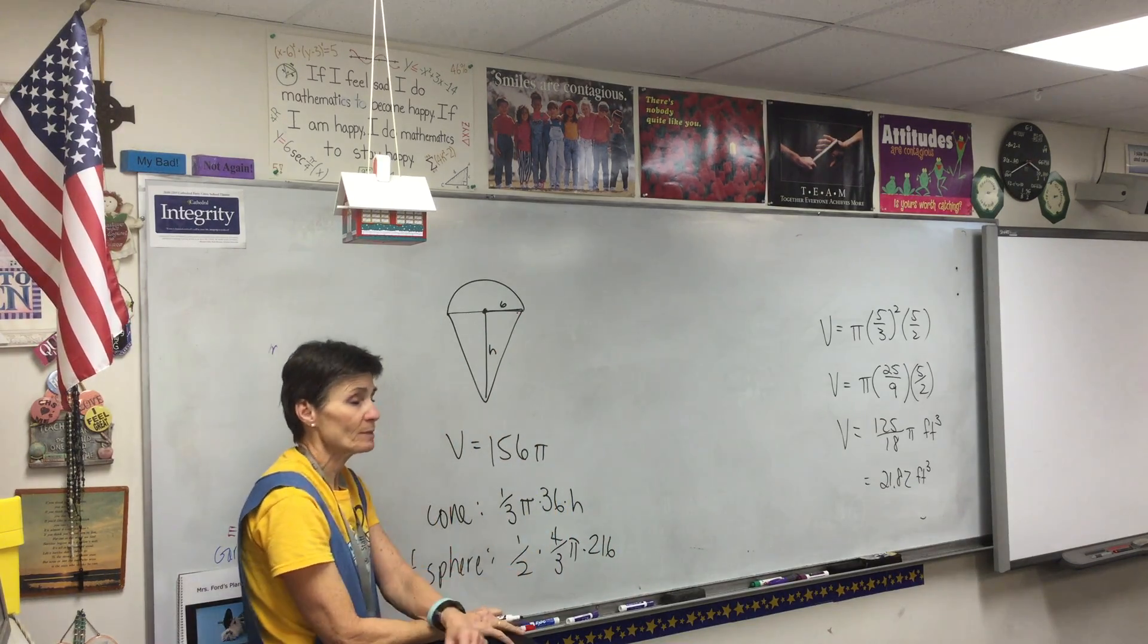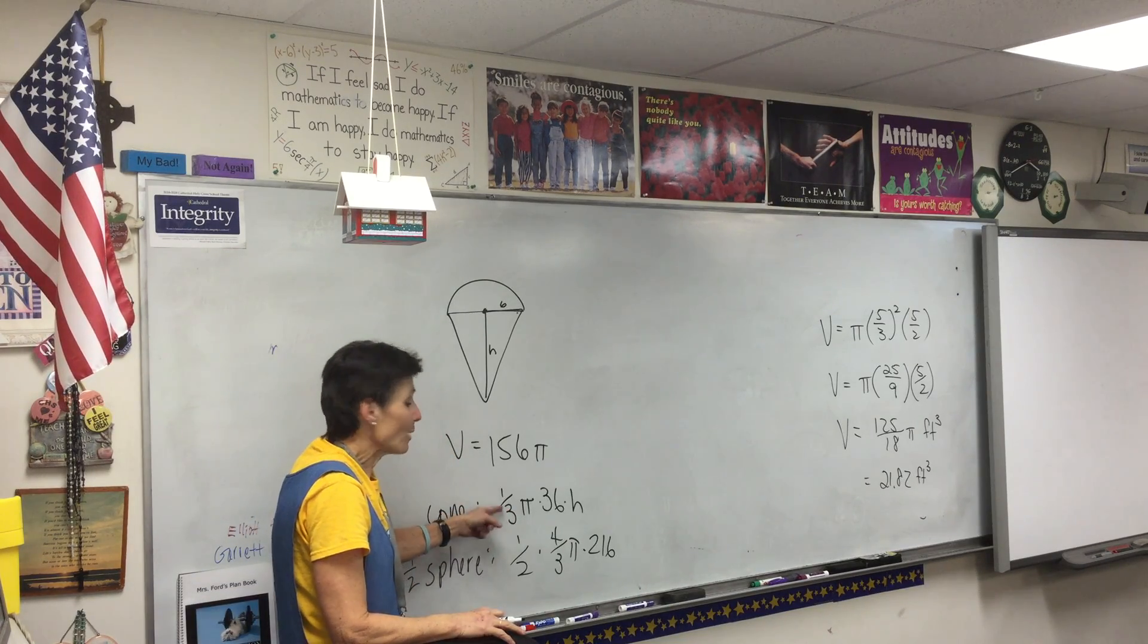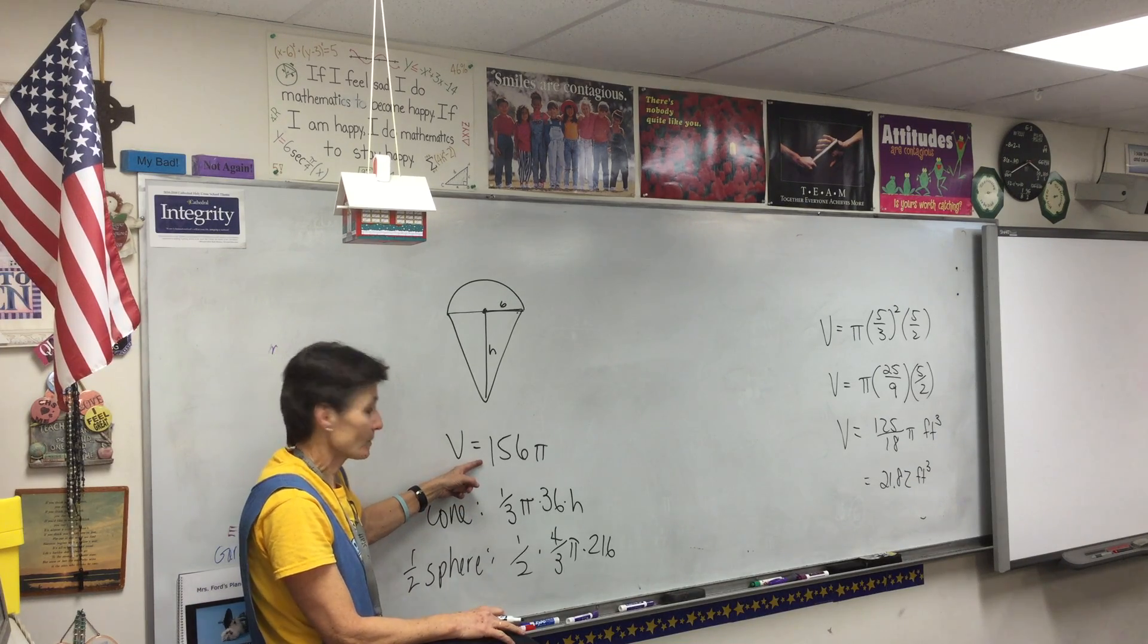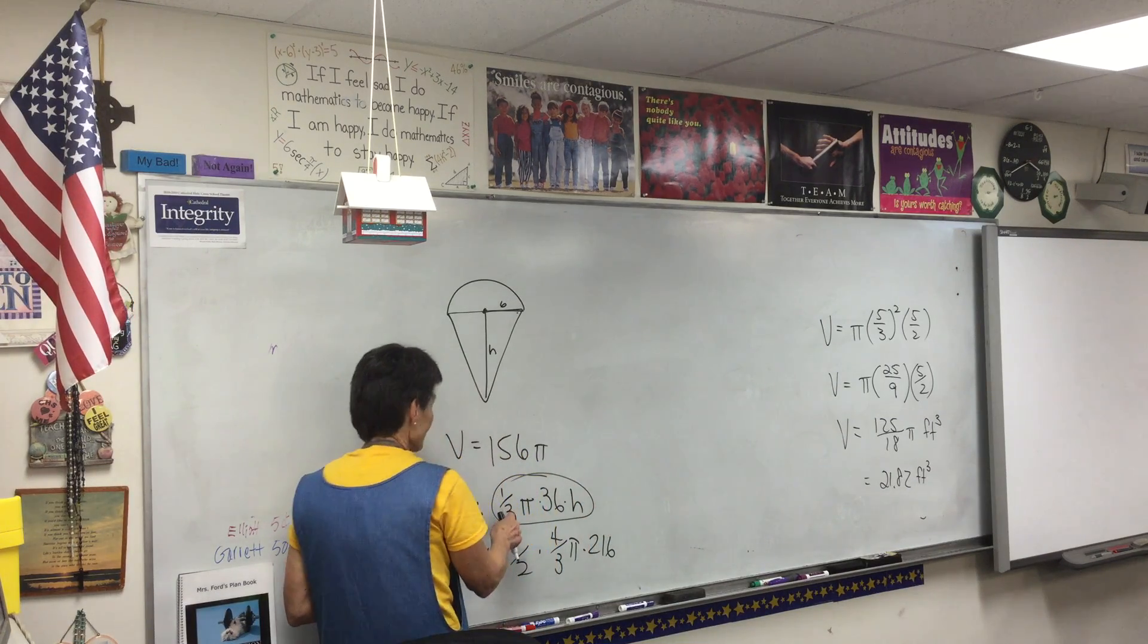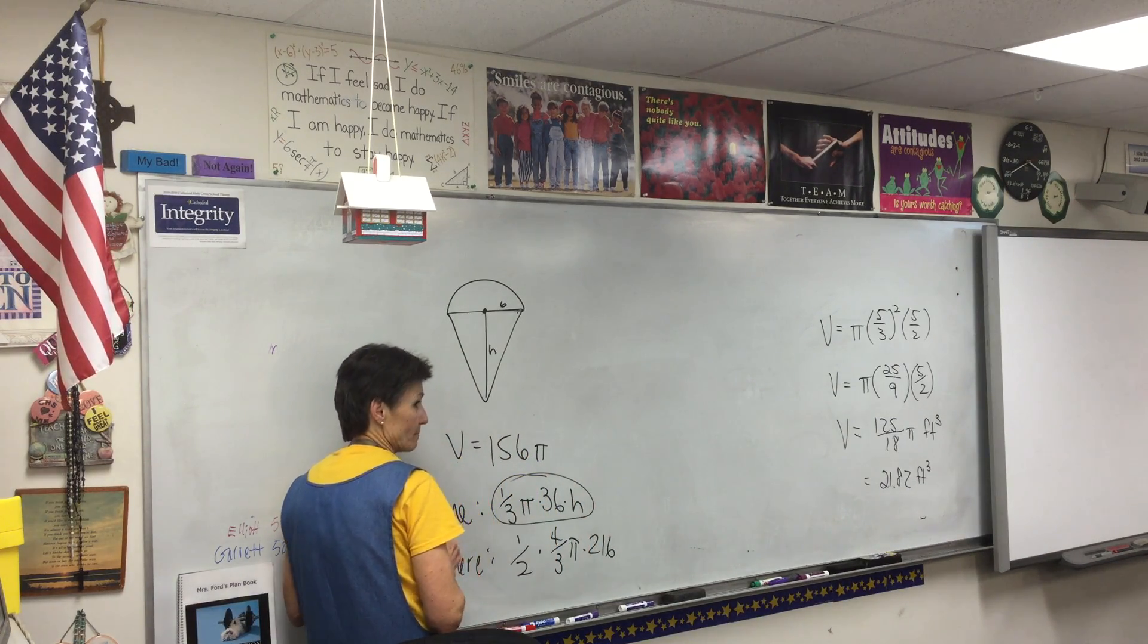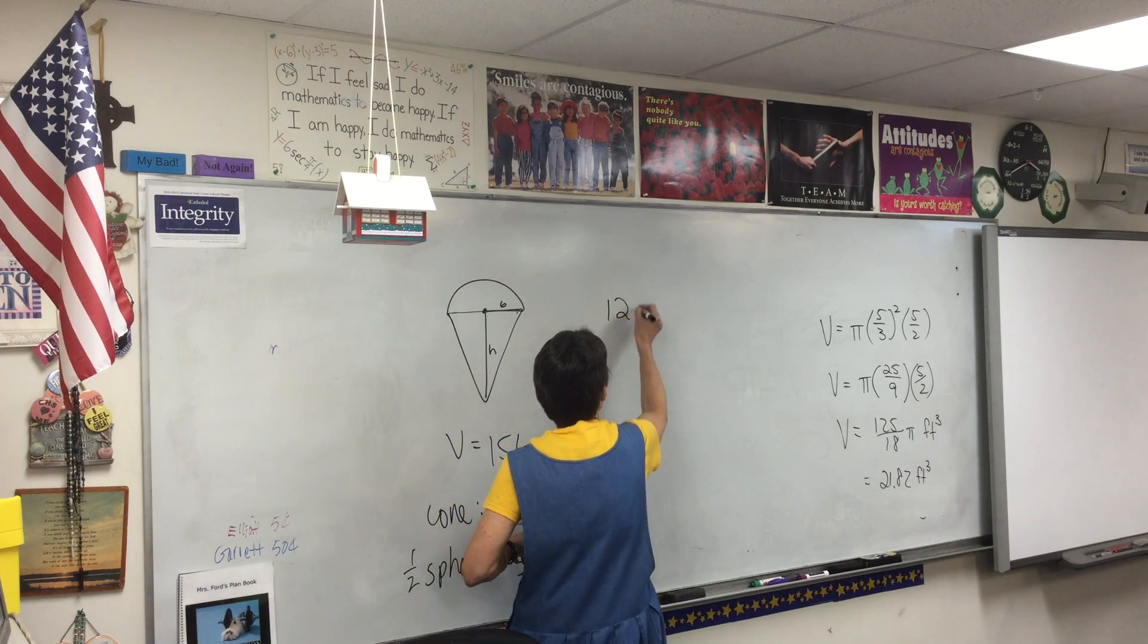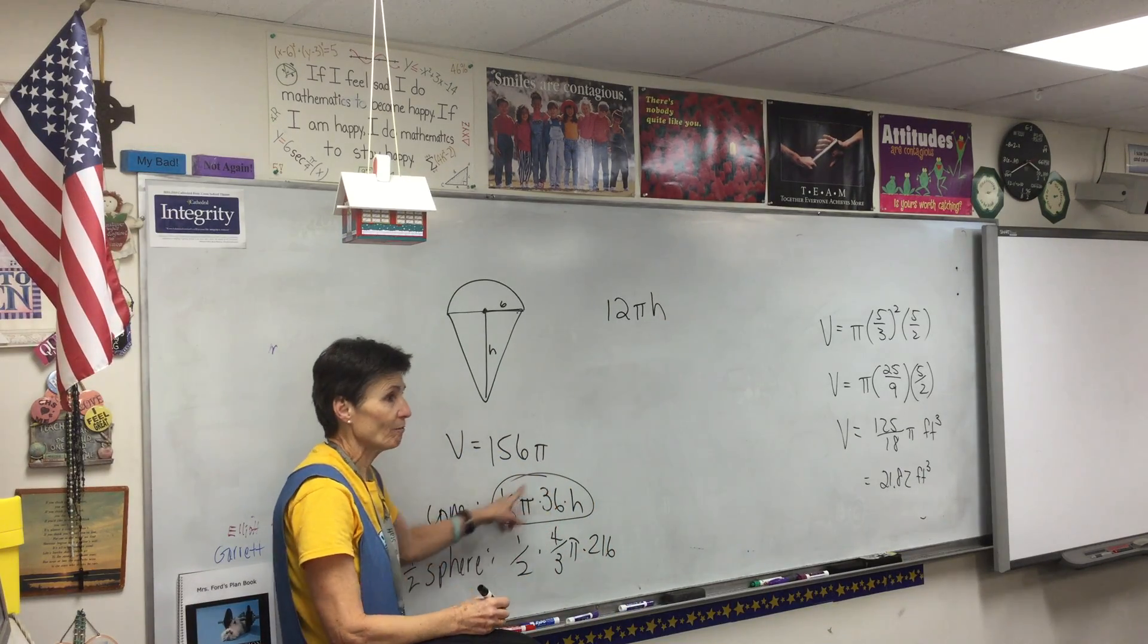6 cubed. Now these two added together make 156π, right? Okay, so let's see, what's this? Let's simplify that. What's 1/3 times 36? 12. So that's 12πh. This right here is 12πh.